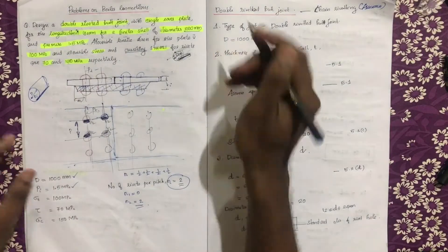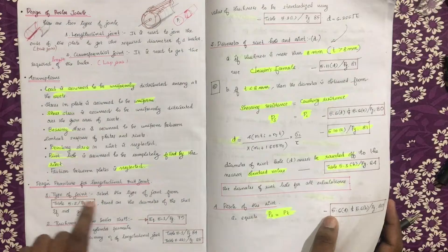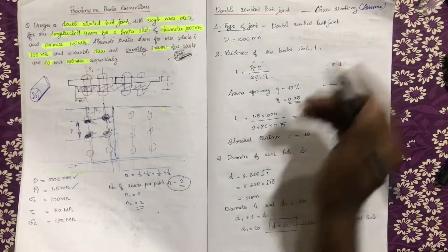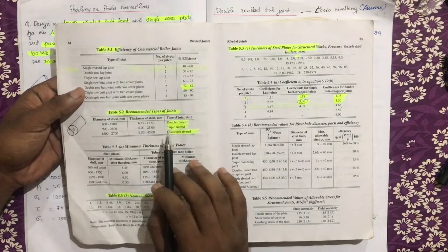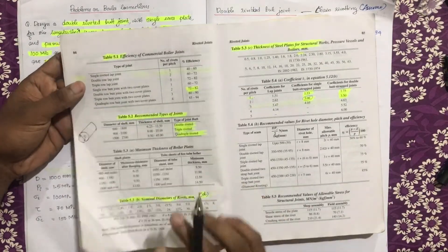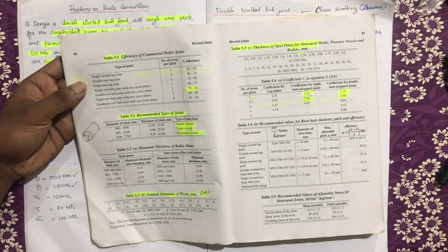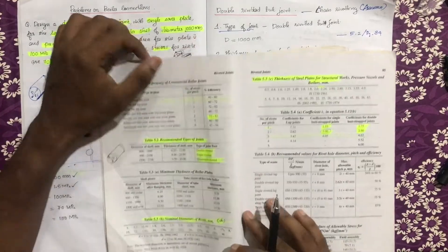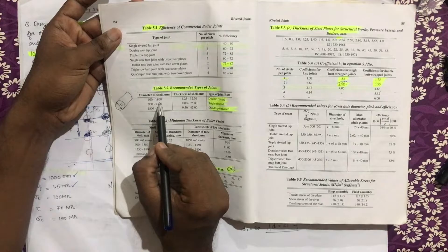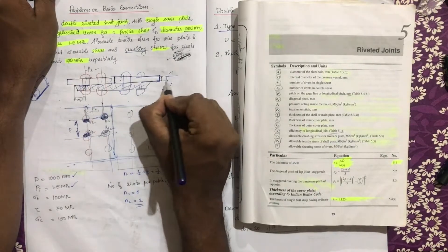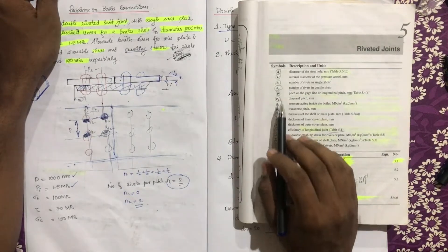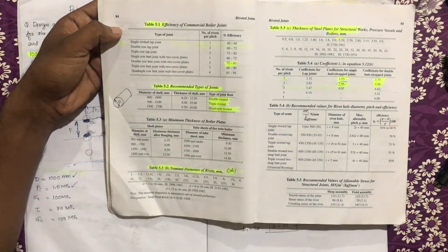First of all, we have to start the design procedure. Select the type of joint from table 5.2. We choose the diameter and thickness of the shell. The diameter is 1000 mm — between 600 mm and 1800 mm. The thickness of the shell ranges from 6.25 mm to 12.5 mm, and it will be double riveted.